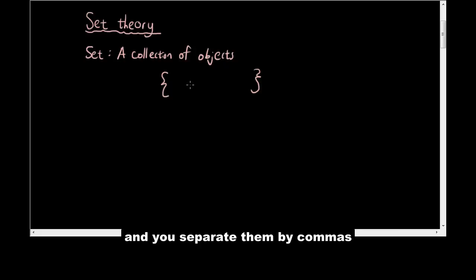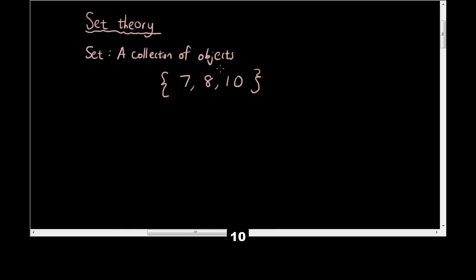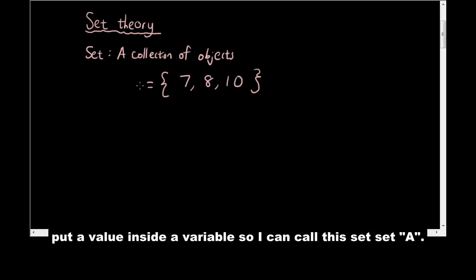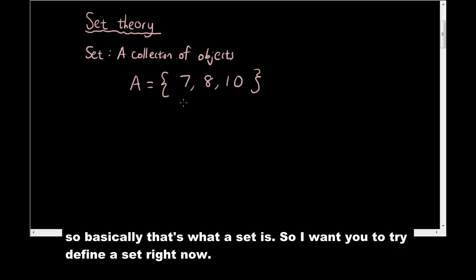For example, let's make a set with a couple of numbers. Let's put in seven, eight, ten. Let's say this is our set. You can also give the set a name, just like in algebra you can put a value inside a variable. So I can call this set 'set A'. Set A is equal to seven, eight, and ten. And so basically that's what a set is.